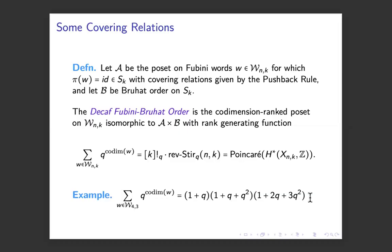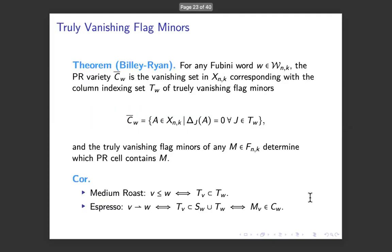You can use this to get another partial order called the decaf partial order, decaf-Fubini-Bruhat partial order. That's going to be the product of two partial orders, one of which is just our old friend Bruhat order on the symmetric group of size k, and then you multiply that by the pushback rule applied to only Fubini words where the initial permutation is 1,2,3,...,k. The product of those two posets is a sub-poset of medium roast. It's also a sub-poset of the espresso roast. And it's nicer. It's a lot nicer. It is ranked. It's a ranked poset. It's ranked by co-dimension. At least with that one, we gave you everything. As well as we understand Bruhat order, we understand these.